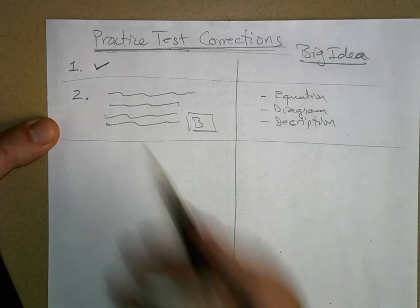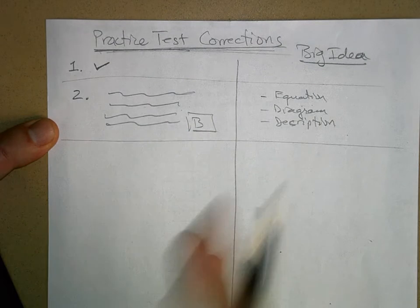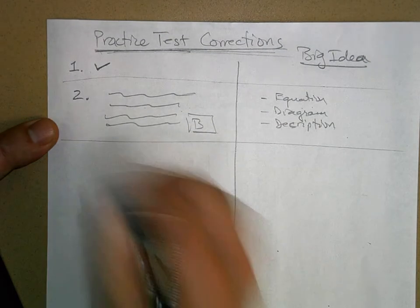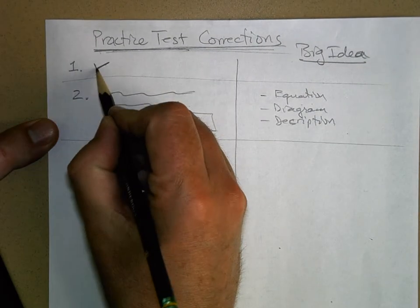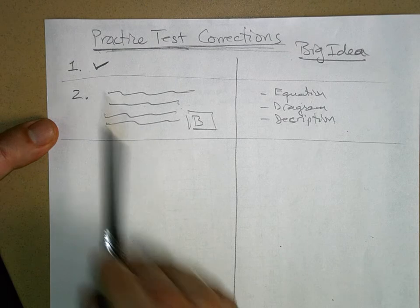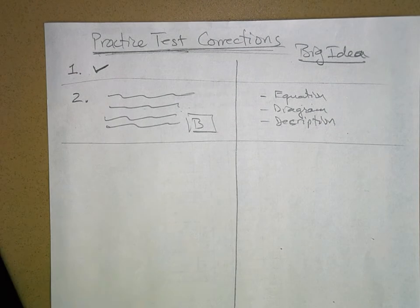Let's say you got problem one. Here's problem one. Let's say you did it right. On a separate sheet of paper, you just put number one, you put a check mark next to it. The check mark means hey, I did it right, I know how it's done, I don't need to do anything further with it.